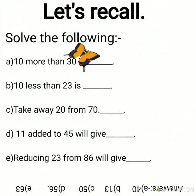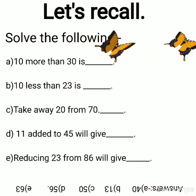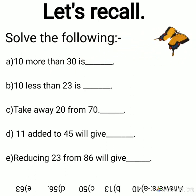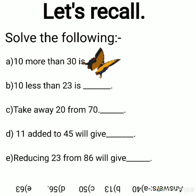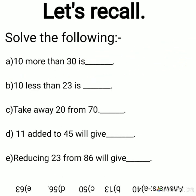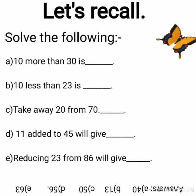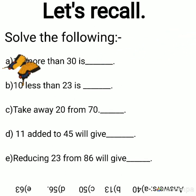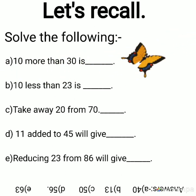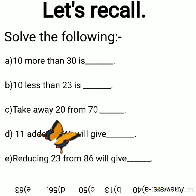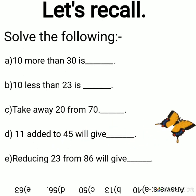But before moving ahead, let us recall what you learned in the last class. Solve the following sums. A: 10 more than 30 is dash. More than means forward counting, adding both the numbers. If you are at 30 and go 10 steps forward, which number will you reach? Yes, it is 40.